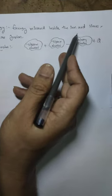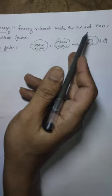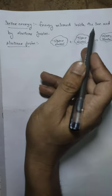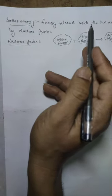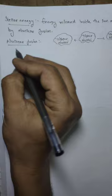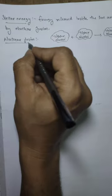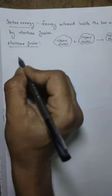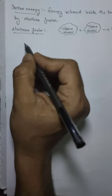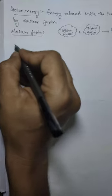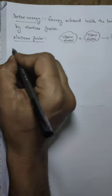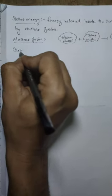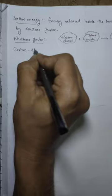Now, stellar energy means energy which is released inside the Sun and the stars. What are the processes taking place inside the Sun and the stars? The assumption is that there are two major processes. The first one is the carbon-nitrogen cycle.